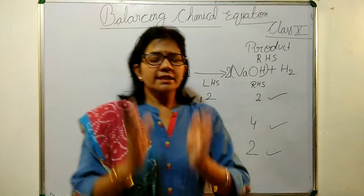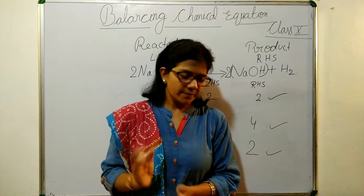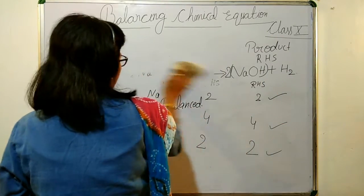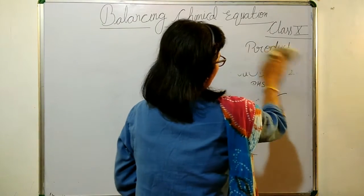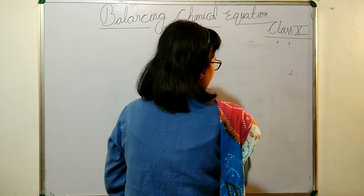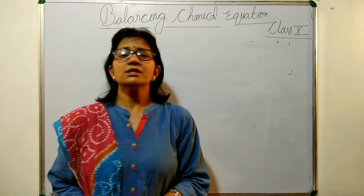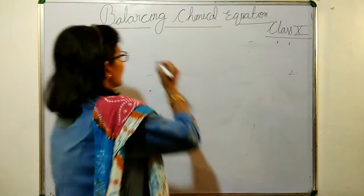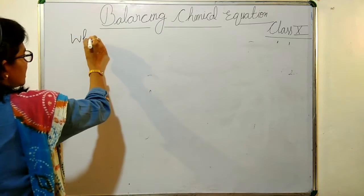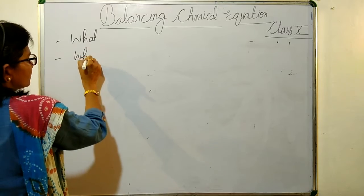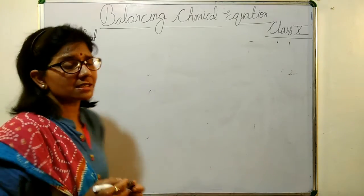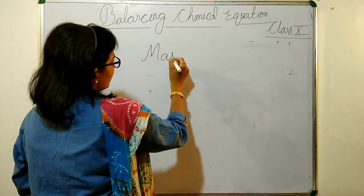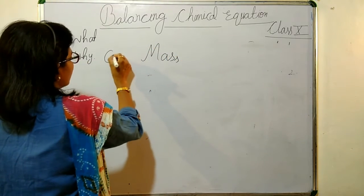That was the difference between a balanced and unbalanced reaction. In every chemical reaction we have to check whether it is balanced or not. If it is unbalanced, we are supposed to balance it. The reason is the concept of conservation of mass.